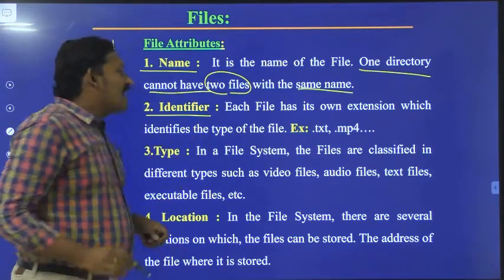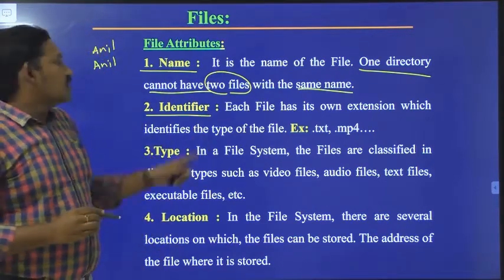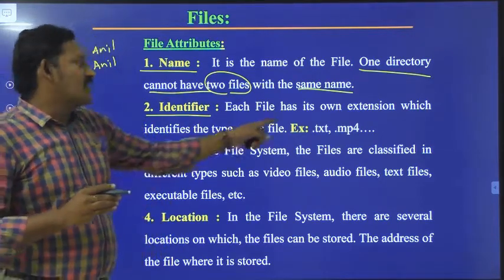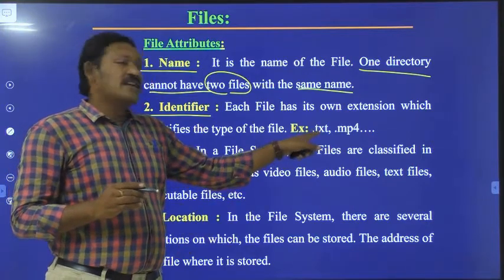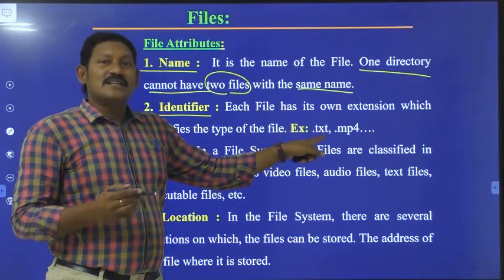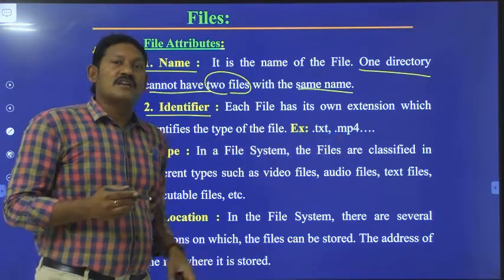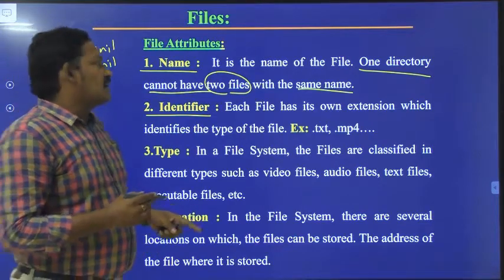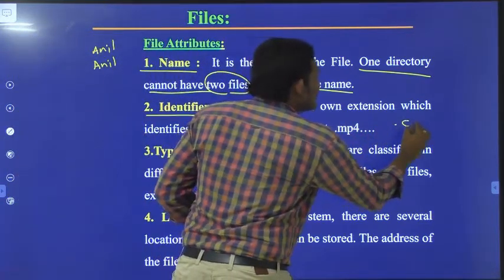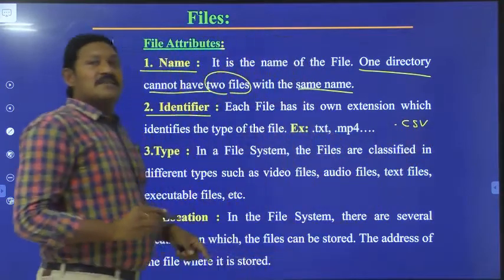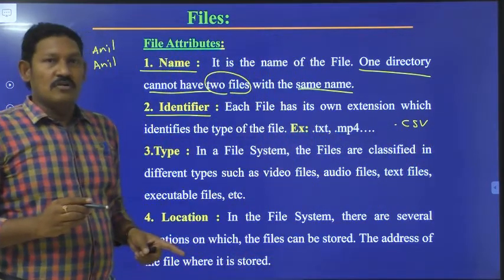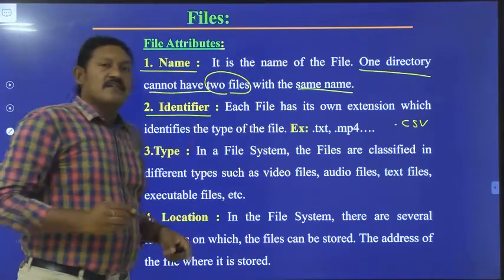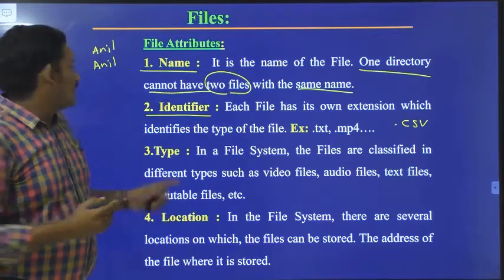Coming to the second attribute, it is the identifier. Each file is saved with some extension, like .txt to indicate it is a text document, .mp4 to indicate it is an mp4 file, .csv for a comma separated values file, or .xlsx for an Excel file. So each file is saved with some extension — that is the identifier.